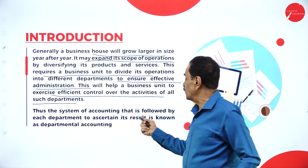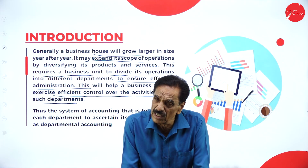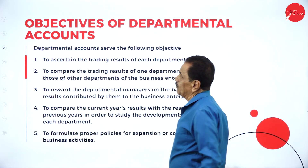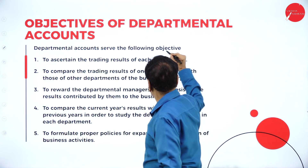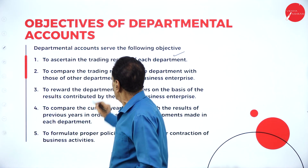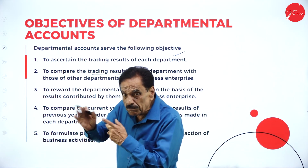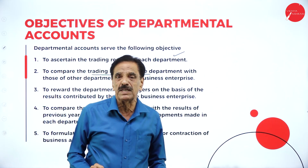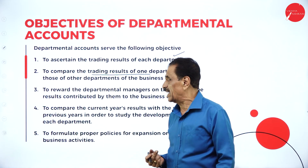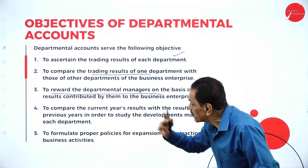The system of accounting followed for each department, where we want to find out the result of each department, is called departmental accounting. Now, what are the objectives of departmental accounts? First, to ascertain the trading results of each department — to find out the gross profit or gross loss. Second, to compare the trading results of one department with another, whether there is improvement or not, and what steps to take.